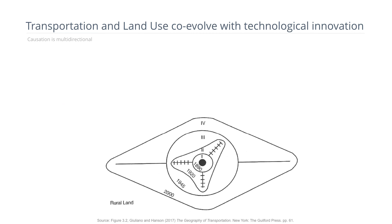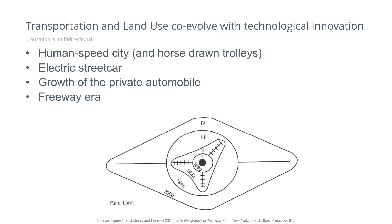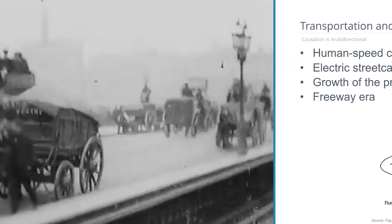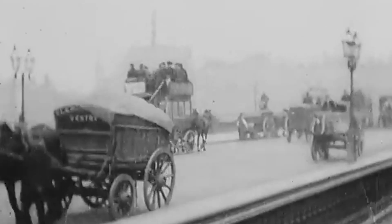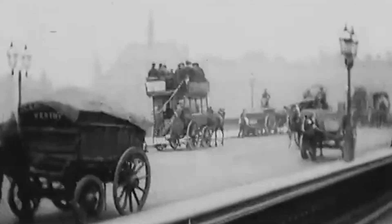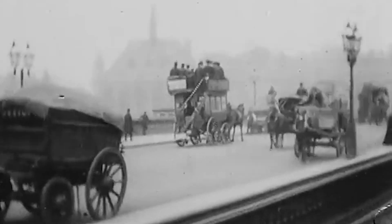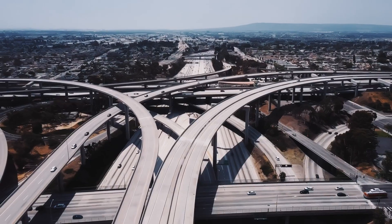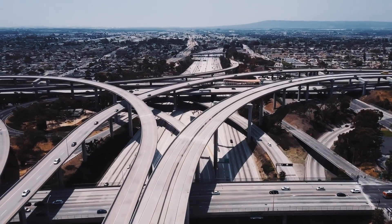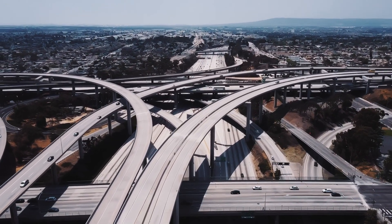This diagram gives a preview of what we'll be talking about, showing how cities have evolved from essentially relying on human-powered and animal-powered transportation, which was very slow, to the current era of automobile transportation.